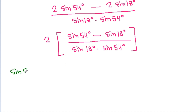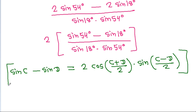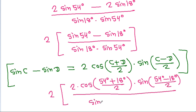Using the identity sin C minus sin D equals 2 cos((C+D)/2) sin((C-D)/2), sin 54° minus sin 18° becomes 2 cos(36°) sin(18°), divided by sin 18° sin 54°.